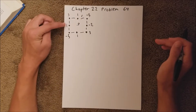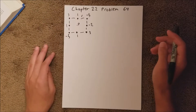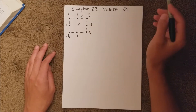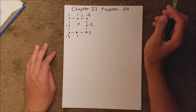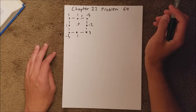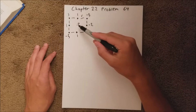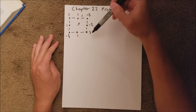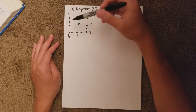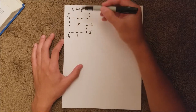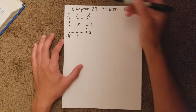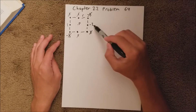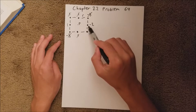This has charge 3, 1, negative 5, etc. The problem gives us the distance R. It asks us to solve for the net electric field produced at the center of the square and write that in unit vector notation. Since this is 3 and this is 3, those two actually cancel. 1 and 1 cancel. Negative 5 and negative 5 cancel.